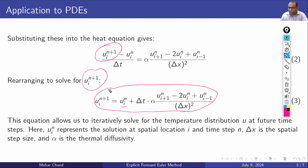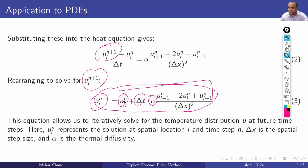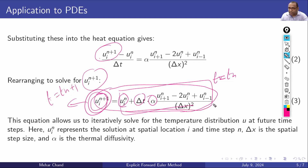Here u_i^n represents the solution at spatial location i and time step n. Delta_x is the spatial step size and alpha is the thermal diffusivity. On the right-hand side, all values — u_i^n, alpha, and the neighboring values — are known from the current time step, corresponding to our initial conditions. The unknown u_i^(n+1) on the left-hand side is what we solve for at time t^(n+1). This equation drives our code to compute and visualize results.